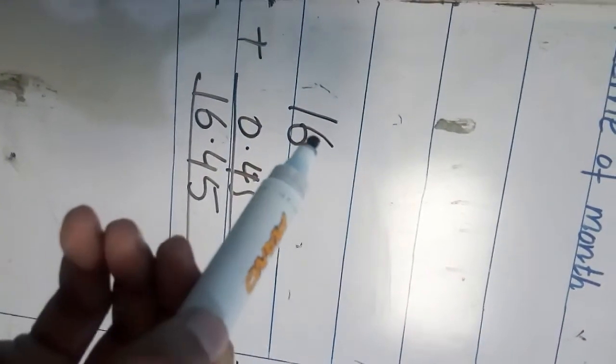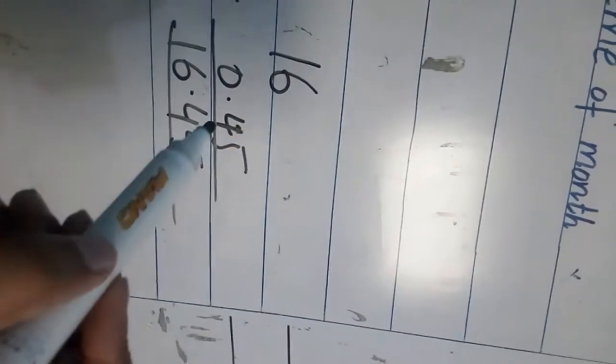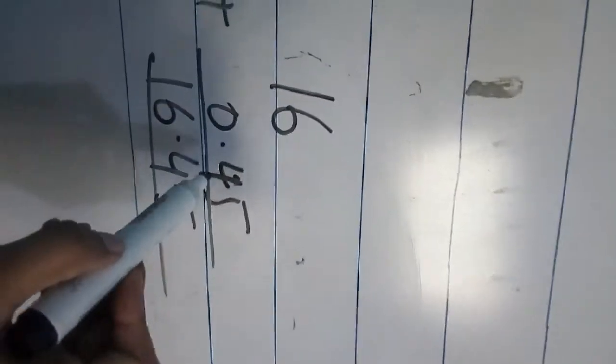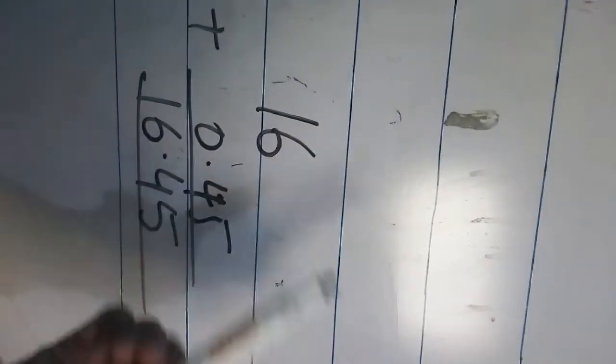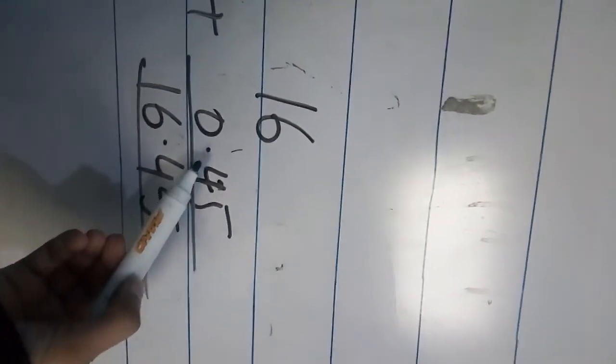As you see, I add this 16 plus 0.45. Here, 16 plus 0.45, the values that is in point I write on the right side, not behind 16. There is no unit and tens, so these are the decimal values. So this answer is 16.45.